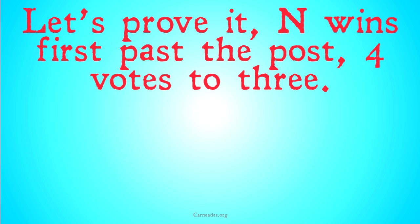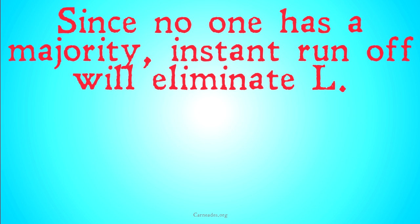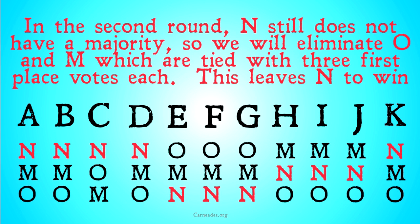Let's prove it. If you want to prove it on your own, I highly suggest it for practice. N wins first past the post, four votes to three to three to one. Since no one has a majority — N just has a plurality — instant runoff is going to eliminate L first. In the second round of instant runoff, no one has a majority still, so we eliminate O and M because they're tied with three first place votes each. This leaves N as the only candidate to win.